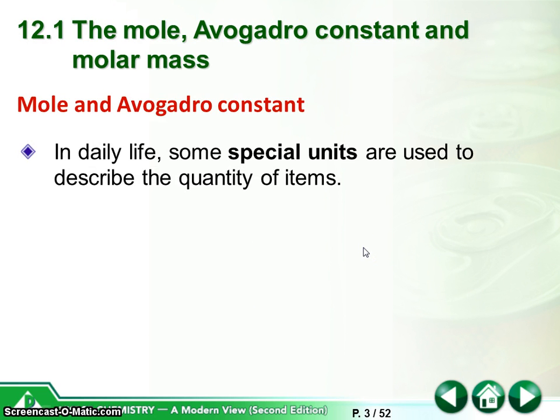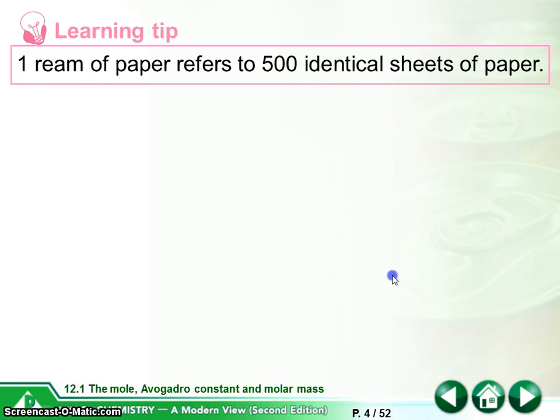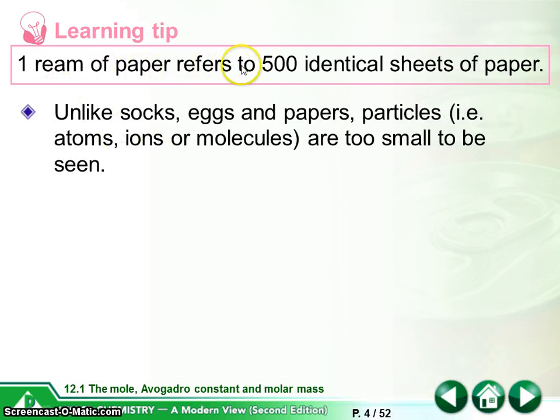So in daily life, some special units are used to describe the quantity of items. Like socks are paired in pairs, eggs are often paired in dozens. So these special units actually represent a number: pairs represent 2, dozen represent 12. Papers are often paired in reams. So one ream of paper represents 500 identical sheets of paper. So ream is actually called the quantity units of a substance.